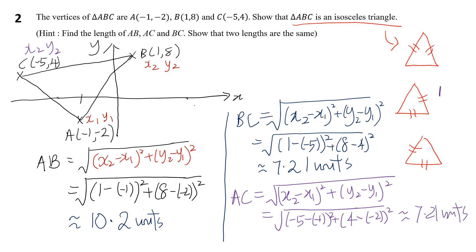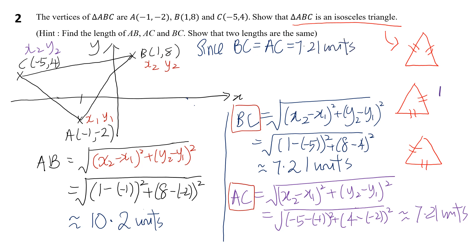We see that two line segments have the same length: BC and AC. We can now write the concluding statement: since BC = AC = 7.21 units, therefore triangle ABC is an isosceles triangle.